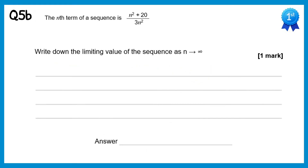Now we need to find the limiting value. If we lose the positive 20, we get n squared over 3n squared. Cancel the n squareds and you get 1 third, or 0.3 recurring.